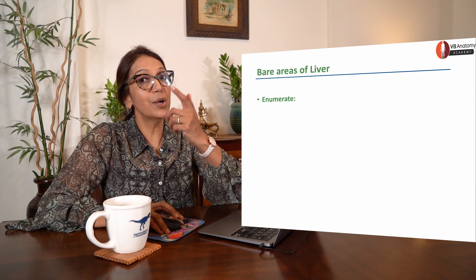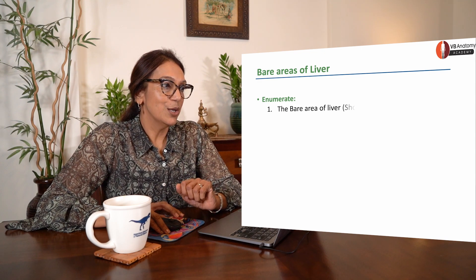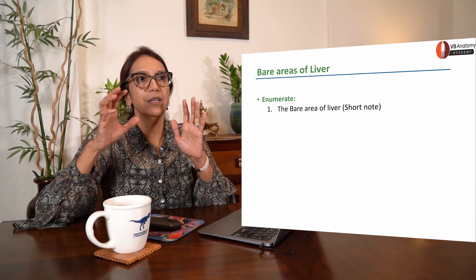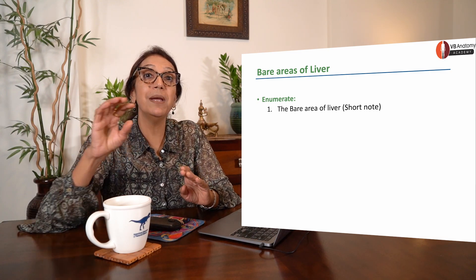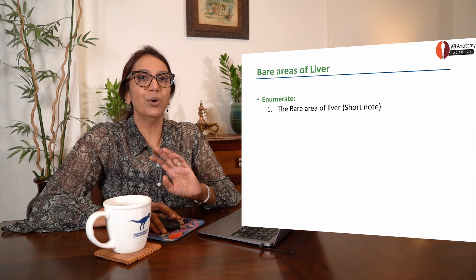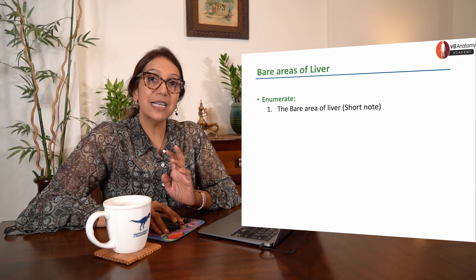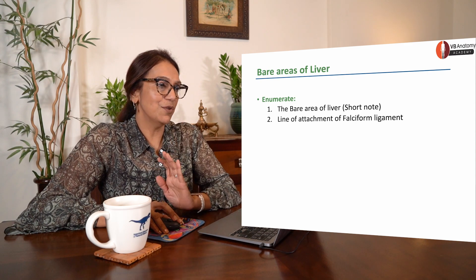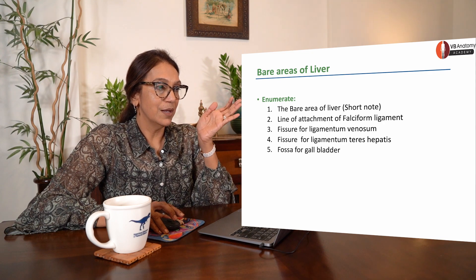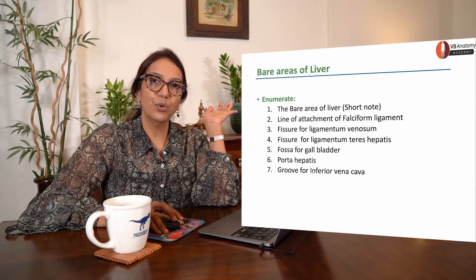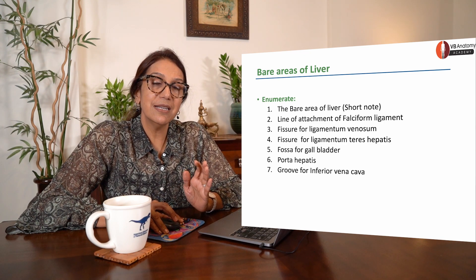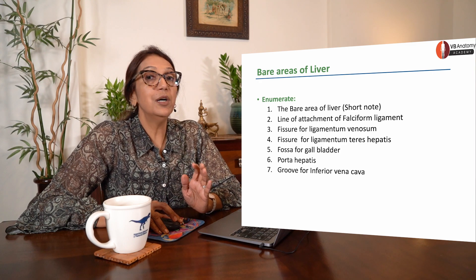Let me enumerate them because you are asked to enumerate in exams. First is the bare area — the biggest bare area of liver is called the bare area of liver. There are others which are bare but very brief. Which are these? Line of attachment of falciform ligament, fissure for ligamentum venosum, fissure for ligamentum teres, fossa for gallbladder, porta hepatis, groove for inferior vena cava.